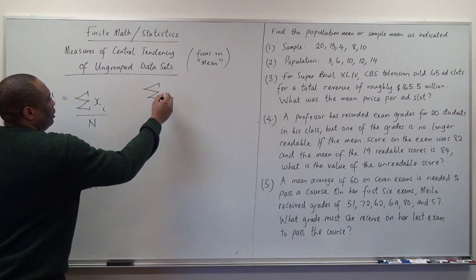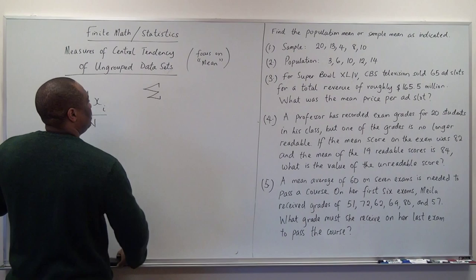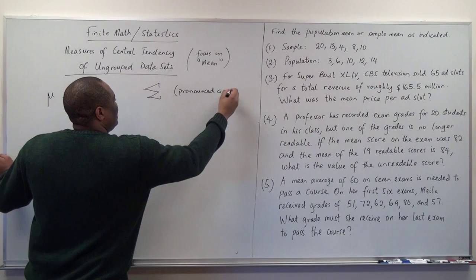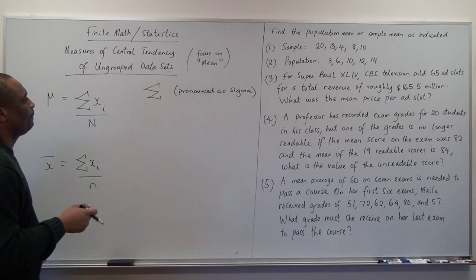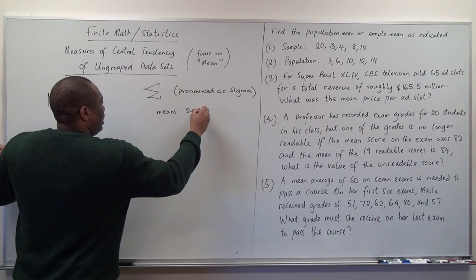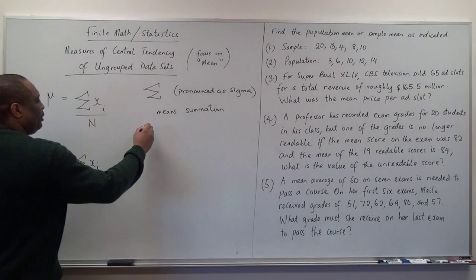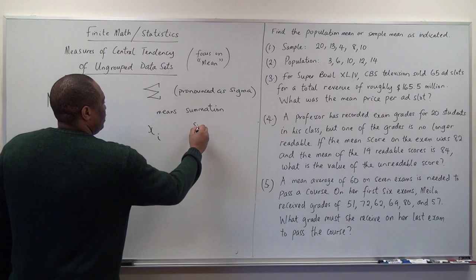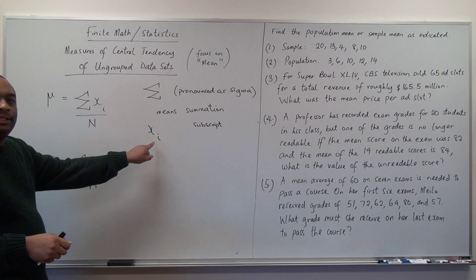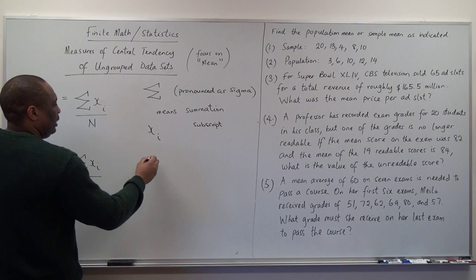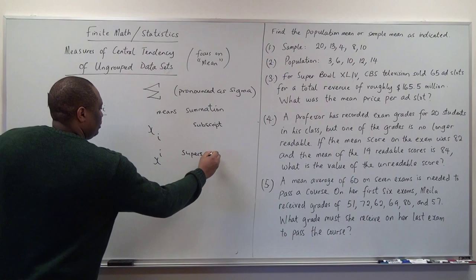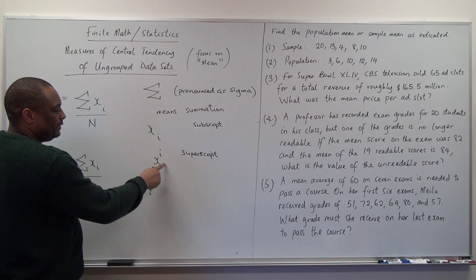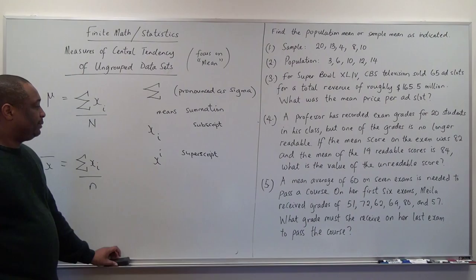The subscript i in X-sub-i means the individual values: X₁, X₂, X₃, X₄, and so on. If i is written below the variable it is a subscript; if written as an exponent it is a superscript. So sigma X-sub-i means: add up all the data values — the first, second, third, fourth, up to Xₙ — and then divide by n.